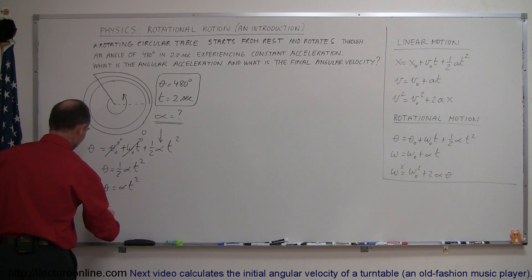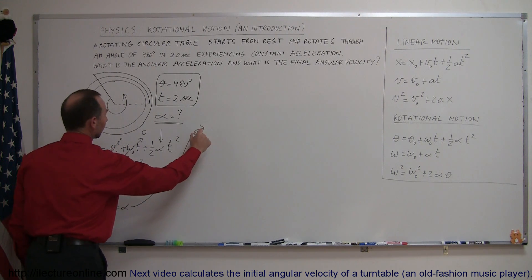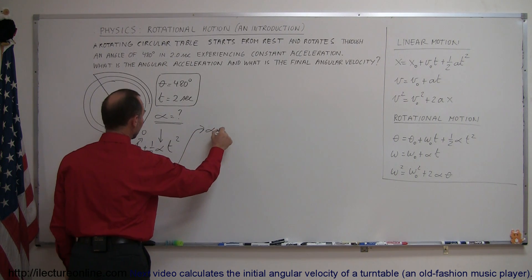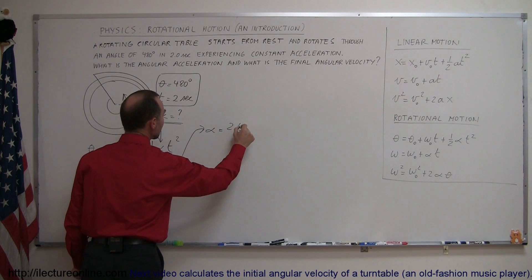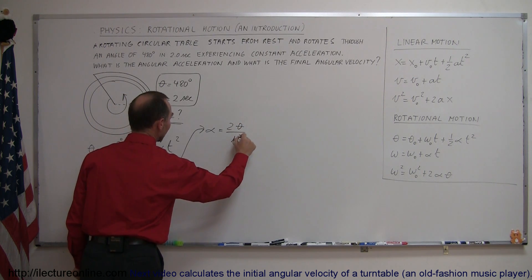we get 2 theta divided by t squared equals alpha. So to find the angular acceleration alpha, we take twice the angular distance divided by the time squared.